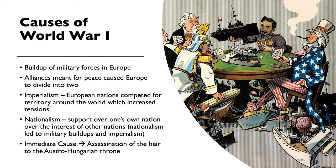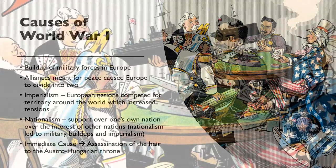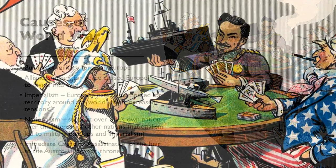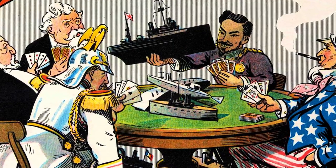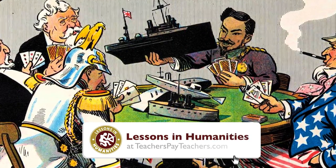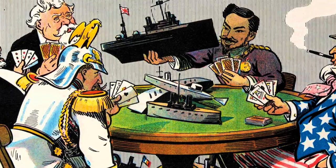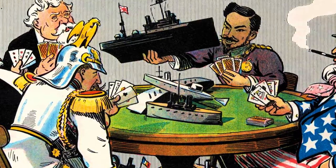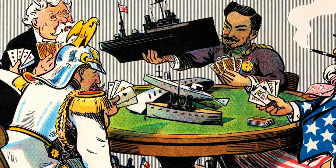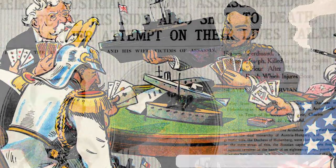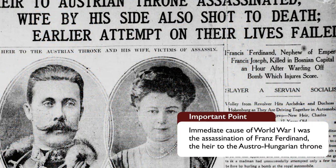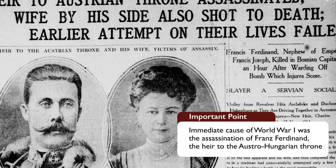The causes of World War I included a buildup of military forces in Europe prior to the first shots fired. There were also many alliances that were meant to keep peace, but these alliances actually divided Europe in two. There was also imperialism — European nations competed for territory around the world, which increased tensions. There was also a lot of nationalism, support for one's own nation over the interests of others, which led to military buildups. But the immediate cause was the assassination of the heir to the Austro-Hungarian throne.